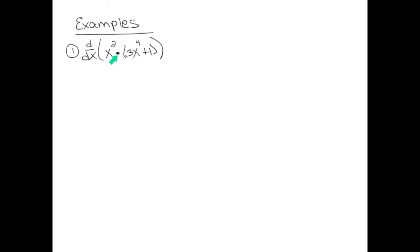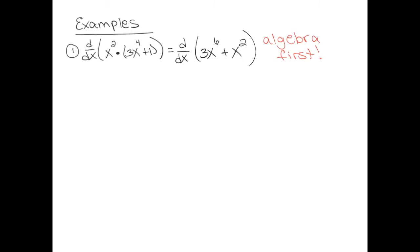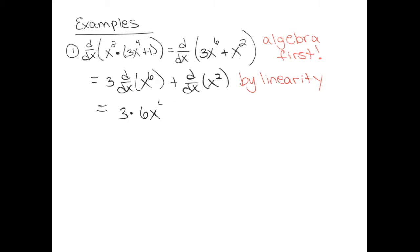Let's do some examples of derivatives. You can see there's a multiplication sign here. We have two choices: we can either apply the product rule, or we can apply algebra first, which is my personal preferred method. Using algebra first, we simply foil everything out. Algebra makes things so much easier. Now we can use linearity — pull out the three, then take the derivative of x to the sixth, and then add the derivative of x squared. Using the power rule on each piece, the final step is to simplify.